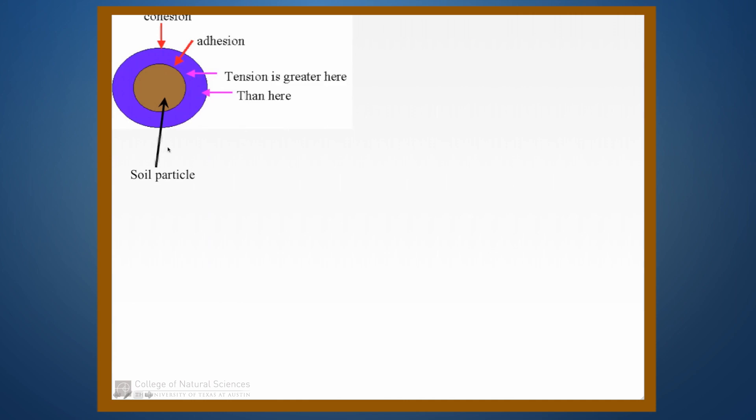So let's take a look at what this looks like. Here you've got a soil particle in brown, and you've got water that's sticking to itself cohesively around that. And then very close to the surface of that soil particle, you have adhesion. And so what that means is that the tension due to adhesion is greater close to that soil particle than it is out here. And so initially when there's a lot of water in the soil, the plant can pull the water off of the soil particle that's out here pretty easily.